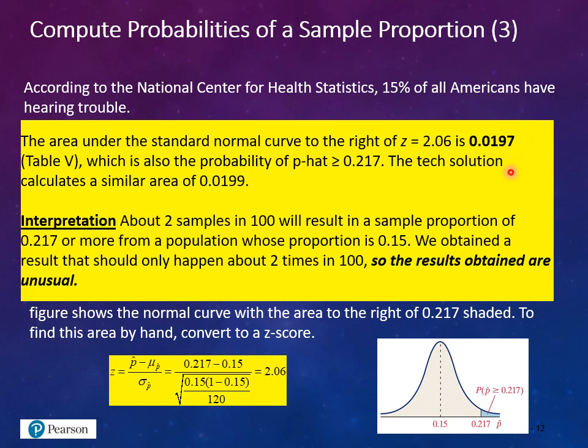The probability is approximately 0.0199, roughly 2%. About 2 samples in 100 will result in a sample proportion of 0.217 or more from a population whose proportion is 0.15. We obtained a result that should only happen about 2 times in 100, so the results are definitely unusual. Remember that about 2% is our cutoff for outliers and unusual events.